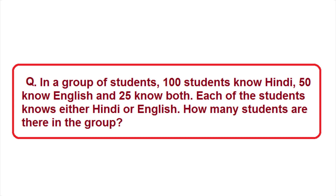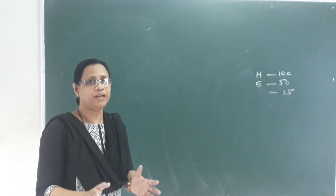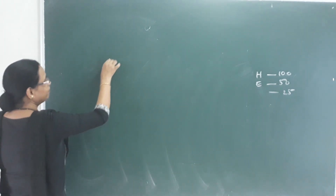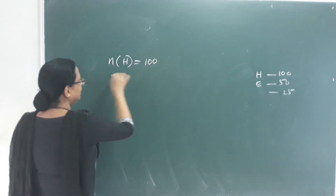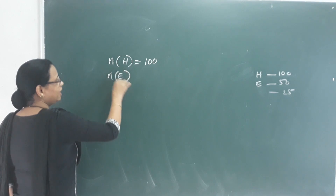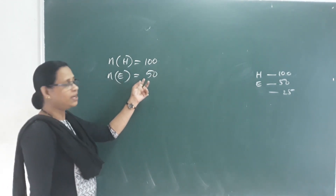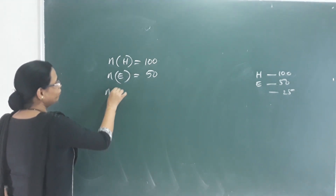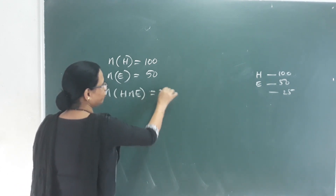Second problem: How many students know either Hindi or English? In a group, there are 100 students who know Hindi and 50 who know English. The number of Hindi intersection English — students who know both — is 25.